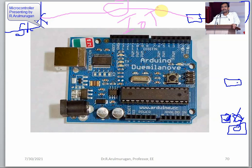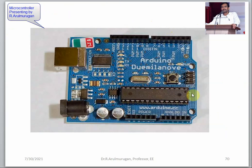Internet of Things means operating devices with the help of the internet. Apps available freely on the Play Store let you pass on/off signals to connected devices through the internet. Everything behind this is a microcontroller.